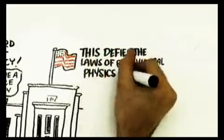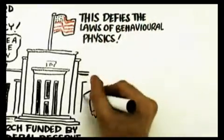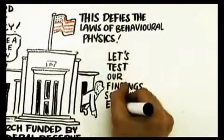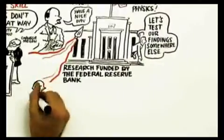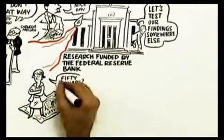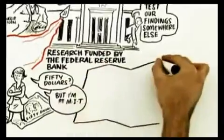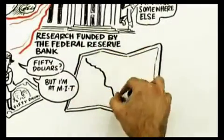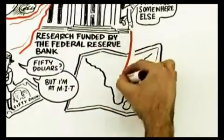It seems to defy the laws of behavioral physics. So this is strange. They say, this is freaky. Let's go test it somewhere else. Maybe that $50 or $60 prize isn't sufficiently motivating for an MIT student. So let's go to a place where $50 is actually more significant.